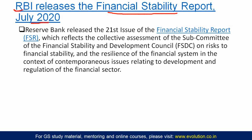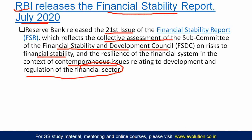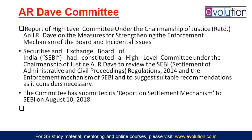The Financial Stability Report for India is released by the RBI. The latest report came in July 2020 as the 21st issue. This report reflects the collective assessment of the subcommittee of the Financial Stability and Development Council on risks to financial stability and the resilience of the financial system in the context of development and regulation of the financial sector. Note: the Global Financial Stability Report is released by the IMF.